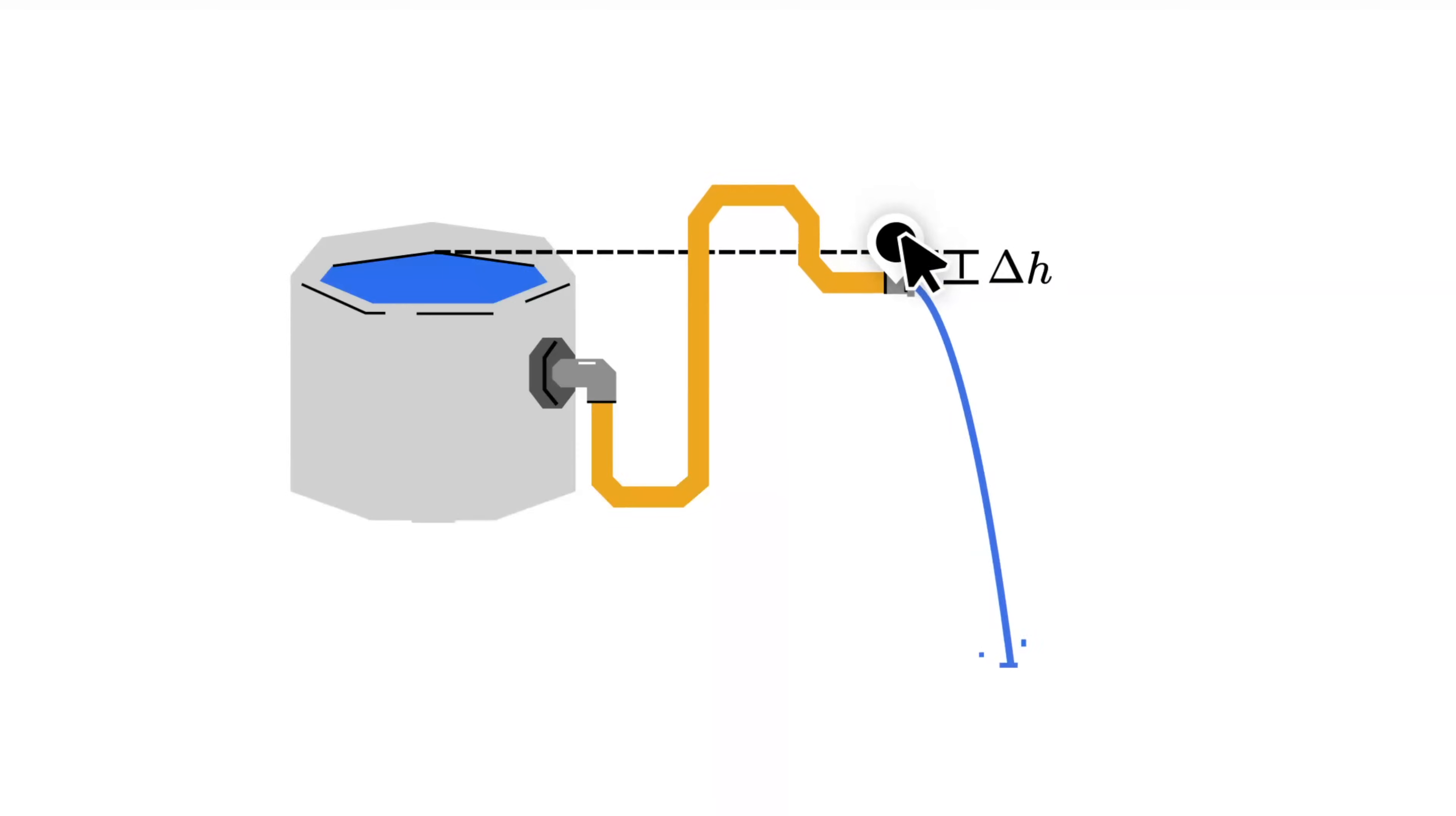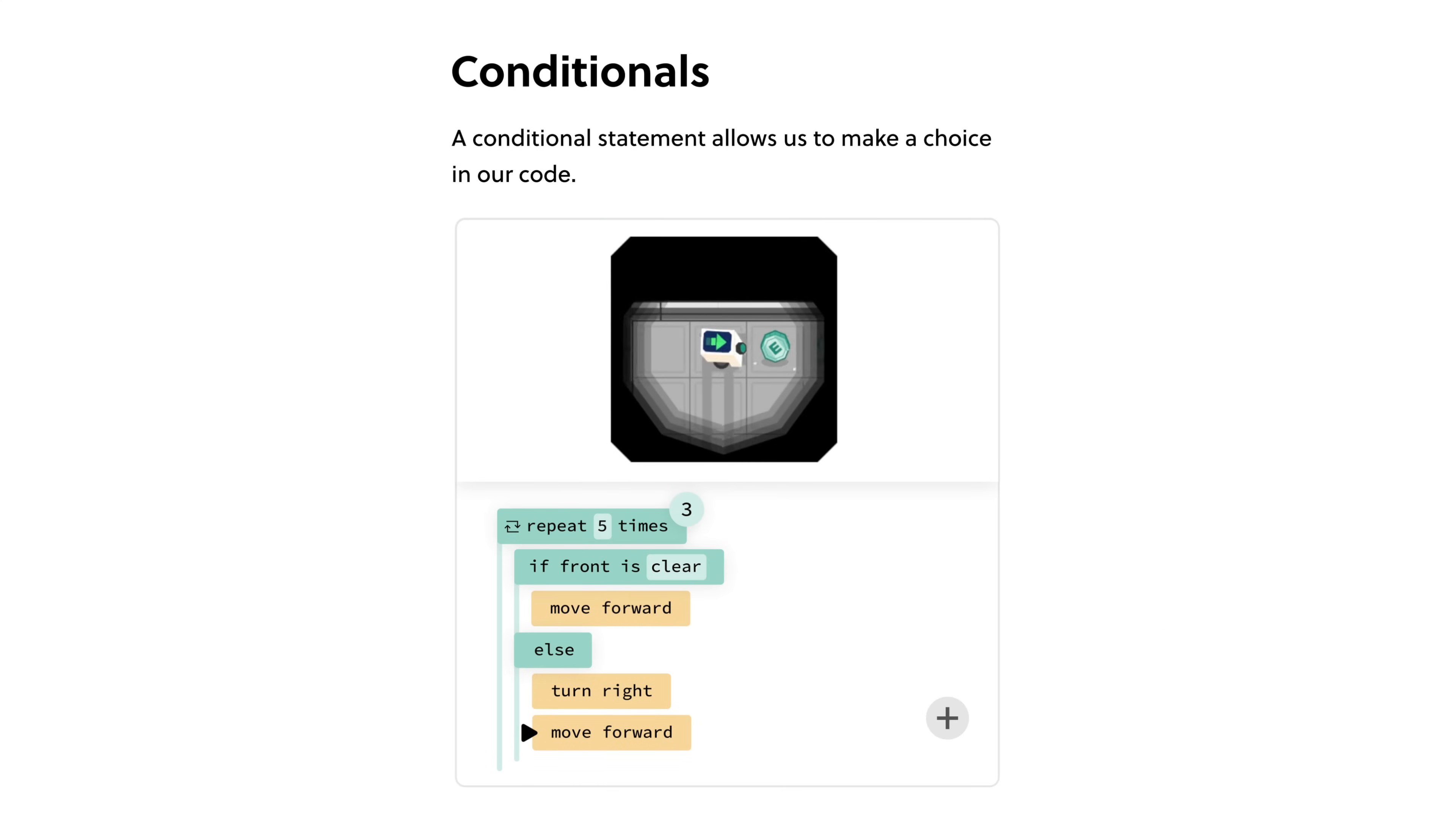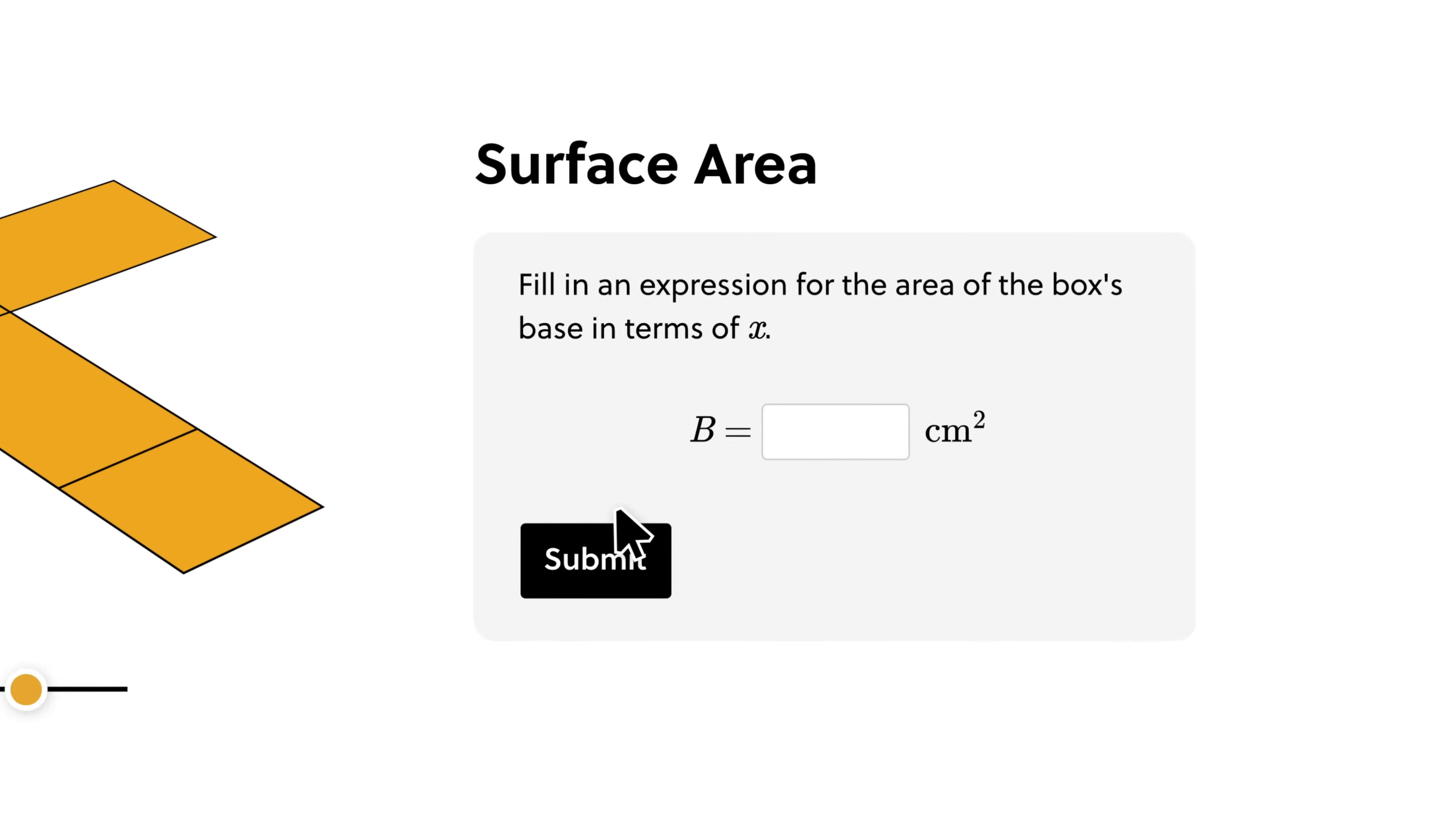Brilliant is the best way to learn math, science, data science, and computer science through engaging hands-on lessons on their website and app. Brilliant's interactive math courses are especially popular and essential to understanding quantum mechanics.